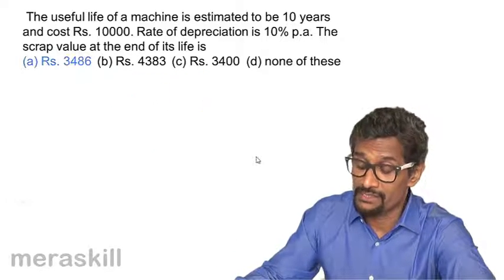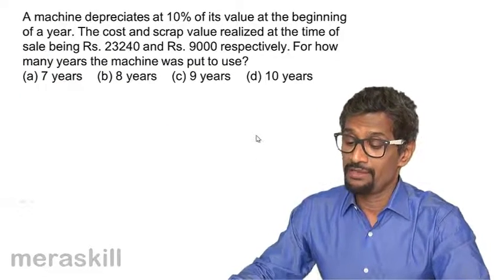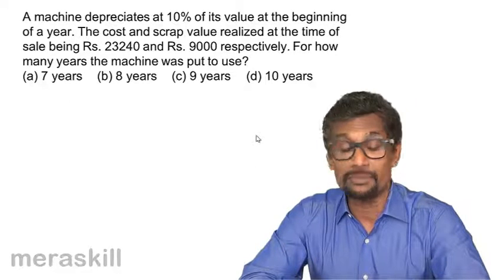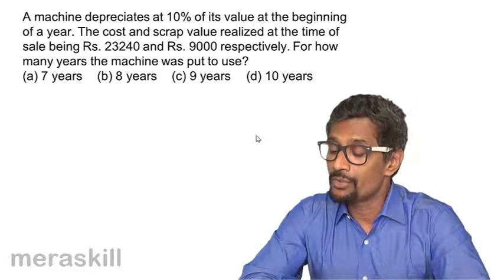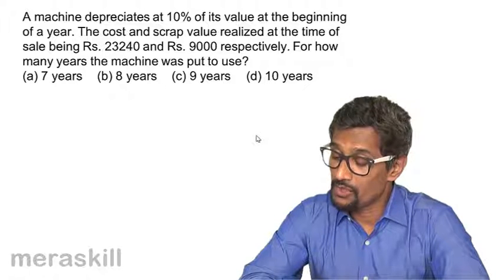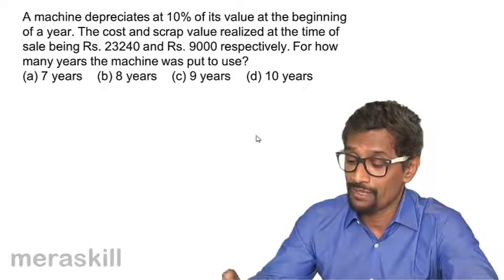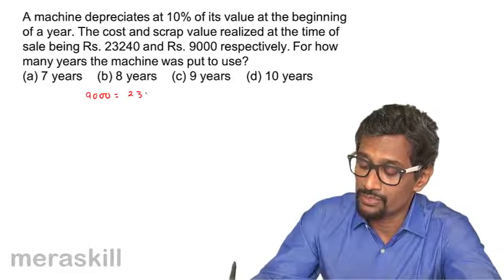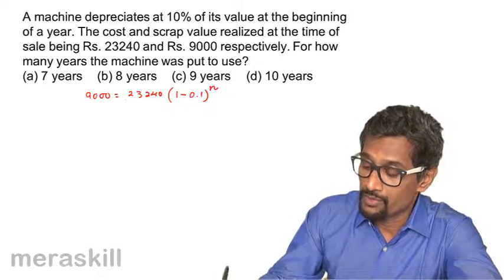A machine depreciates at 10% of its value at the beginning of the year. The cost and scrap value realized at the time of sale are ₹23,240 and ₹9,000 respectively. Setting up the equation: 9,000 equals 23,240 into (1 minus 0.1) raised to n, which simplifies to 0.9 raised to n equals 9,000 divided by 23,240.